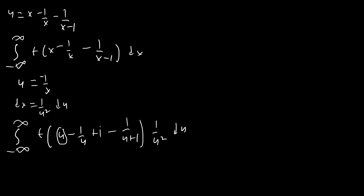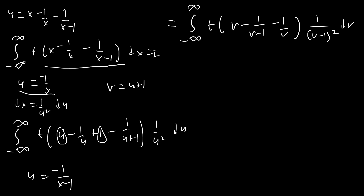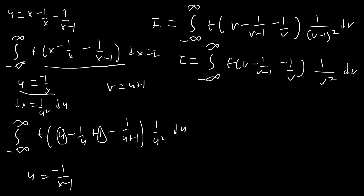We set v equals u plus 1 — the bounds remain negative infinity to infinity and the differential is the same — giving the integral from negative infinity to infinity of f(v minus 1/(v minus 1) minus 1/v) times 1 over (v minus 1) squared dv. This is exactly the same form as what we had before. Similarly, using u equals negative 1 over (x minus 1) gives another form of i equal to the integral of f(v minus 1/(v minus 1) minus 1/v) times 1 over v squared dv.